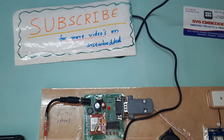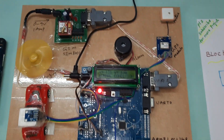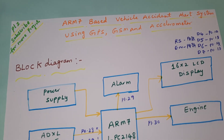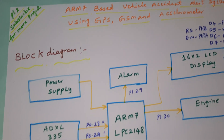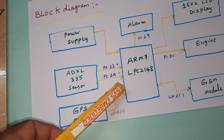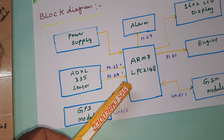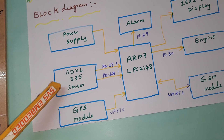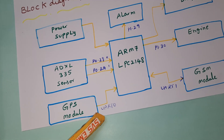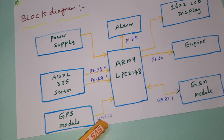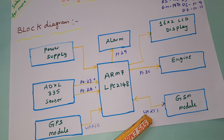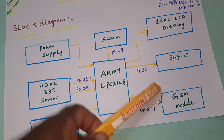Hi, we are from SVS Embedded. The project title is ARM7-based vehicle accident alert system using GPS, GSM, and accelerometer sensor. We are using an ARM7 LPC2148 board, a 32-bit processor, an ADXL335 MEMS accelerometer sensor, one GPS module connected with UART0, and a GSM modem SIM800L connected with UART1.